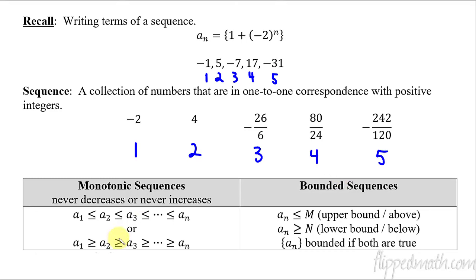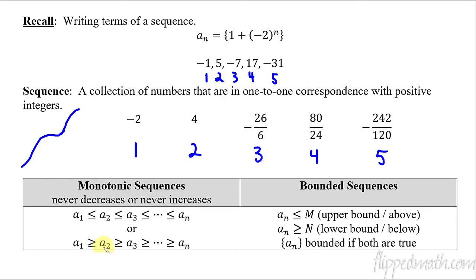A monotonic sequence — you might not have heard of this before. Monotonic basically means it either never decreases or it never increases. So if I were to graph the numbers, it would be going up, up, up — it might flatten out but it's not going to turn around and decrease. That would be a monotonic sequence where the numbers just get bigger and bigger, or vice versa — it could be decreasing, getting smaller and smaller. So the first number is smaller than or equal to the second, and so forth, or it's always larger than the next term.